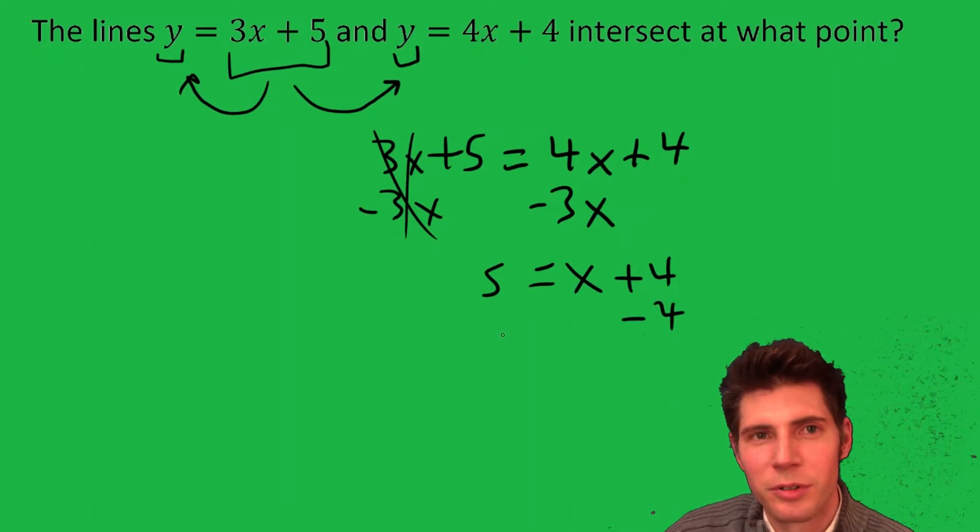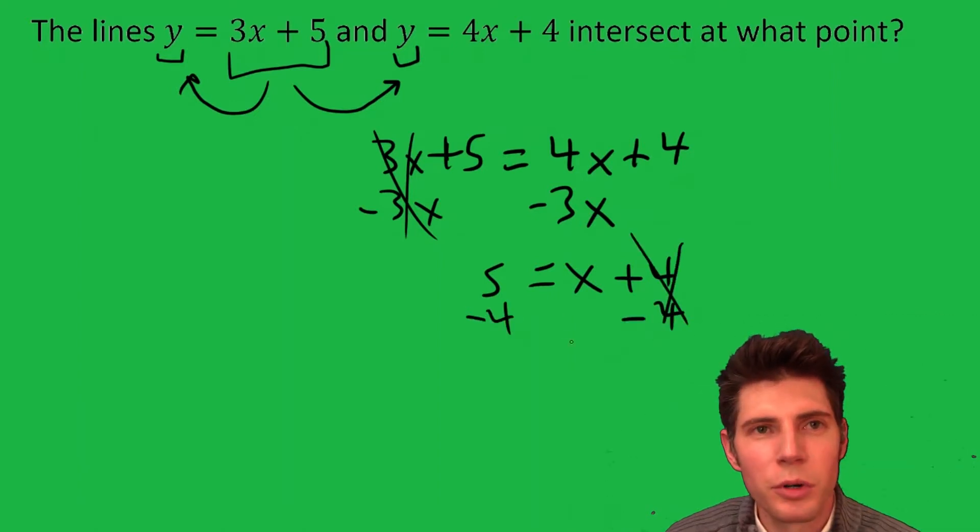Then we want to get the x by itself. So these 4's cancel. So we just have an x here. And then 5 minus 4 is 1.